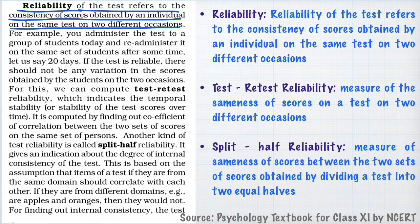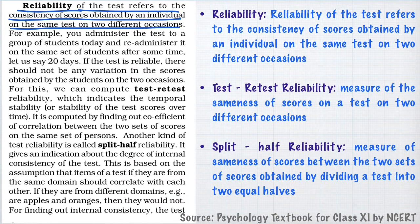The two sets of scores — your score on today's test and your score on the same test after 15 days — are going to be similar. This is called test-retest reliability: a measure of the sameness of scores on the same test on two different occasions.